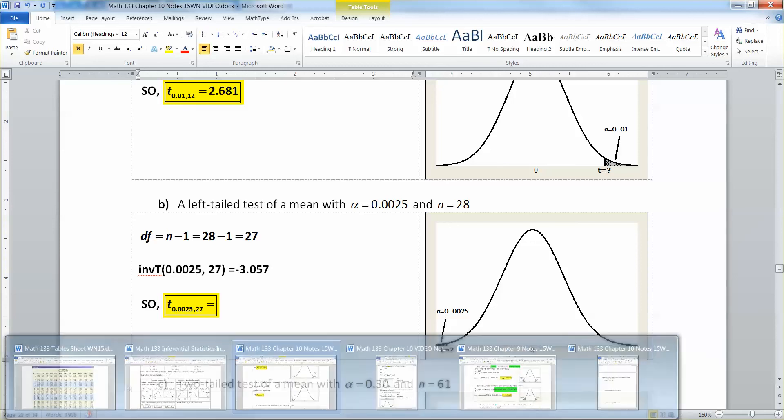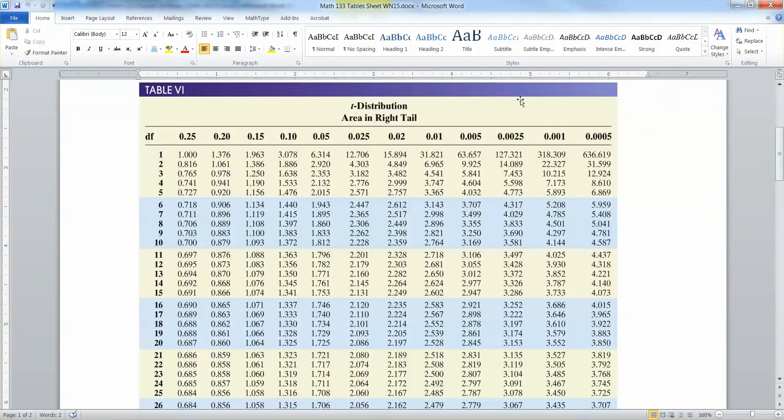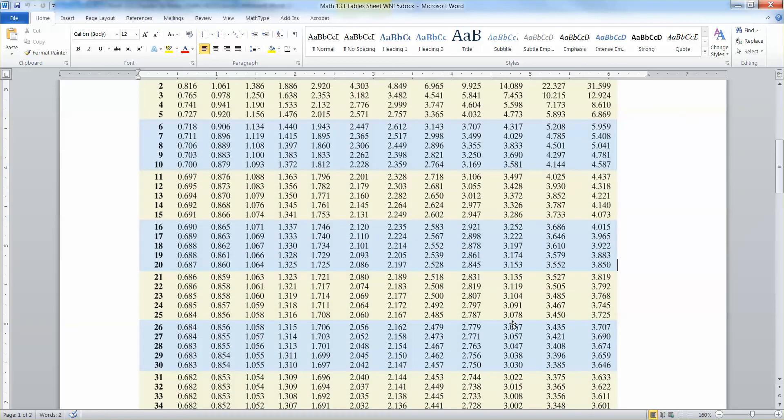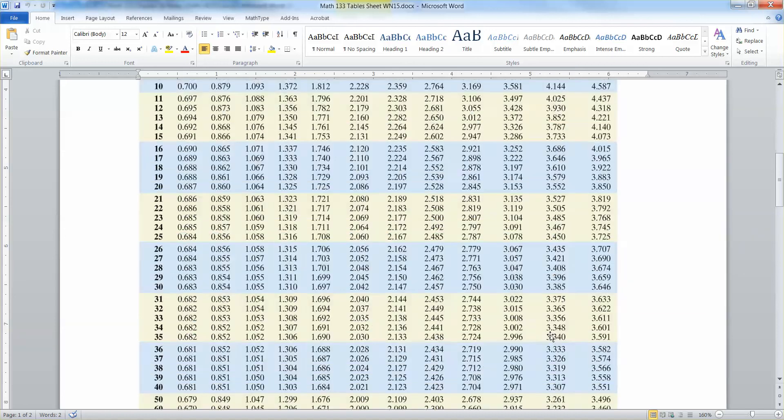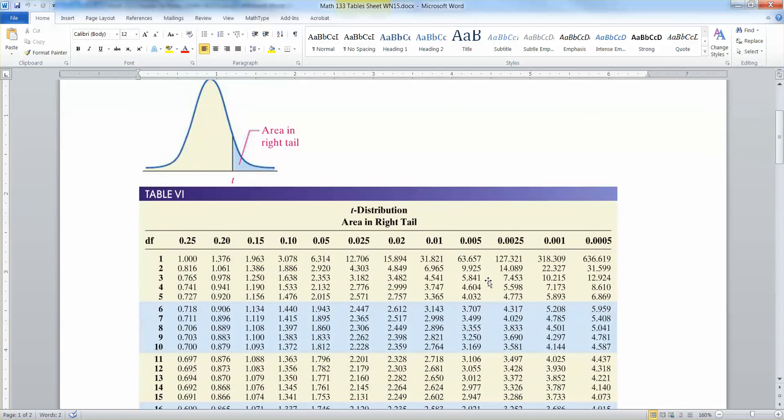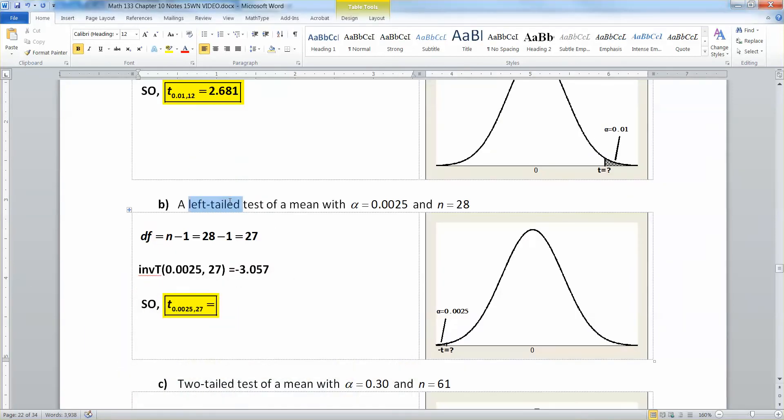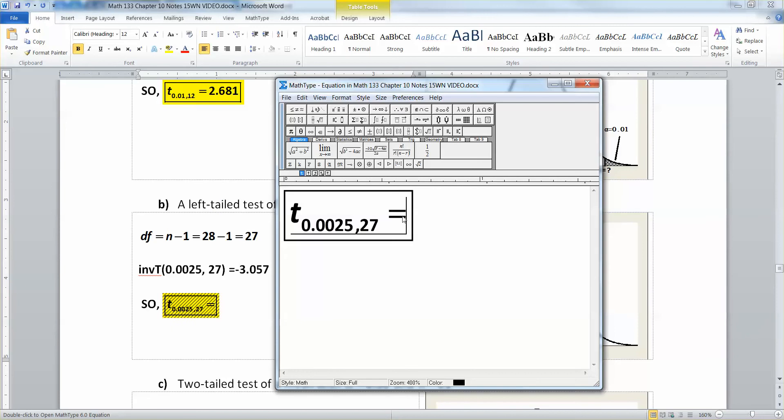And just on a side note, let's see if we can find it in the table. So it's the 0.0025 column. Degrees of freedom is 27. So we go down to the bottom, and there it is, 3.057. Now the table only gives positive values. Basically, everything in the table is a right-tailed item. You can tell that because of the picture up on the top. So everything in this table is right-tailed. We want left-tailed right here. So we just have to make it negative. So our answer is negative 3.057. And technically, it's a negative T value, negative T sub 0.0025.